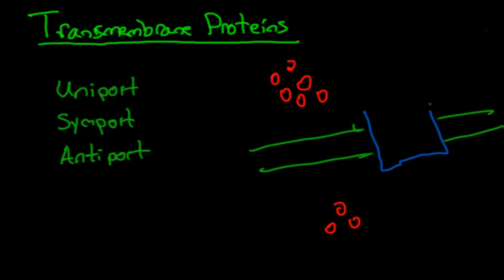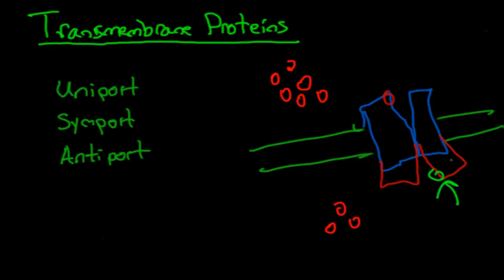Antiports work basically the same way, but they're moving in the opposite direction — that's literally the only difference between the symport and the antiport. With antiports, the red solute binds to the antiporter on the outside, causing a high affinity for another solute inside the cell. Once the inside solute binds to the antiporter, it causes another conformational change allowing the green solute to exit the cell and the red one to enter — thus increasing the red solute's concentration inside the cell and decreasing the green solute's concentration inside the cell. So that's the basics of uniports, symports, and antiports — all of which are carrier proteins.